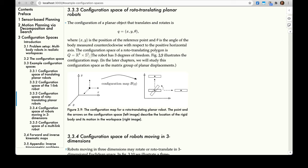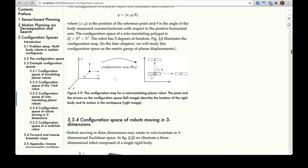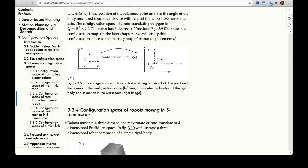The configuration space of a rototranslating polygon is Q equals the Cartesian product of R^2, the plane, and S^1. S^1 tells us the orientation, the angle that it's rotated to. The robot has three degrees of freedom. Figure 3.9 illustrates the configuration map. We have x and y on the plane in this figure, and theta is the axis coming towards us, coming out of the board. So this is a three-dimensional space, and this configuration map takes us to the workspace of the robot. In later chapters, we will study this configuration space as the matrix group of planar displacements. We need a little group theory before that.